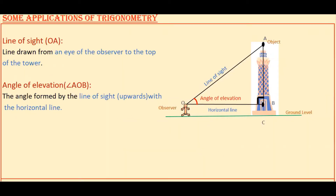Hello everyone! Today I am going to tell what are line of sight, angle of elevation and angle of depression, and how to apply trigonometric ratios to find the height of a tower, distance between any two objects, and line of sight values.